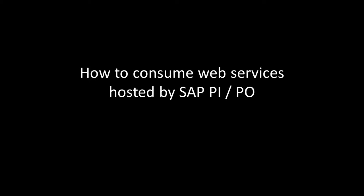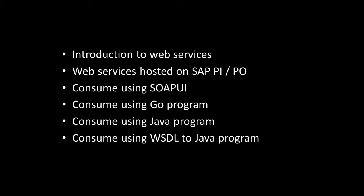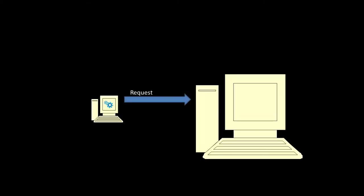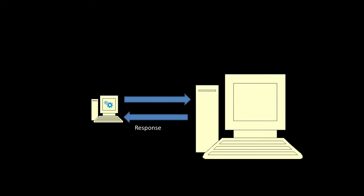This video is about how to consume web services hosted by SAP PI/PO. It includes these topics. Introduction to web services: it's communication between two systems. The requestor will send a request to the server, then a stipulated program will be executed on the server. If it is a synchronous scenario, a response will be sent back to the requester.